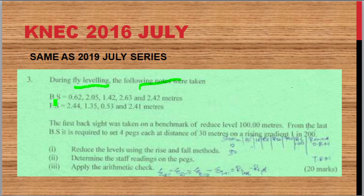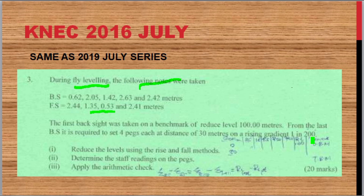The notes included only the backsights and the foresights of our instrument recording. The first backsight was taken on a benchmark of a reduced level of 100 meters. From that last backsight, it was required to set four pegs each at a distance of 30 meters on a rising gradient of 1 into 200. The tasks are: (1) reduce the levels using the rise and fall method, (2) determine the staff readings on the pegs, (3) apply the arithmetic check — a total of 20 marks.